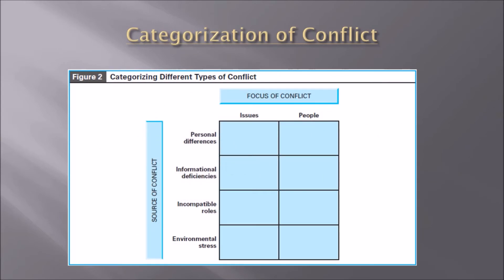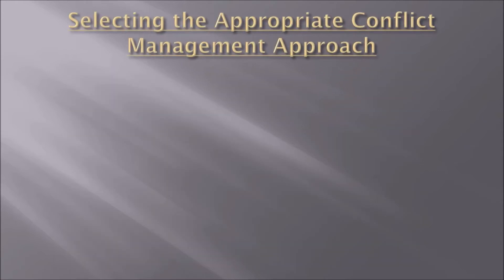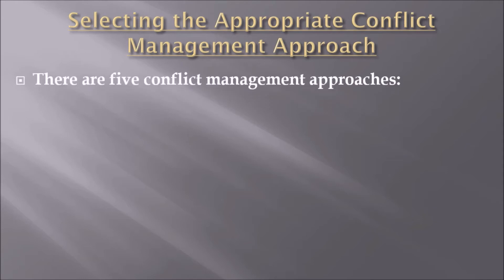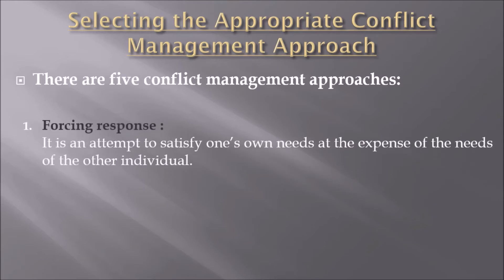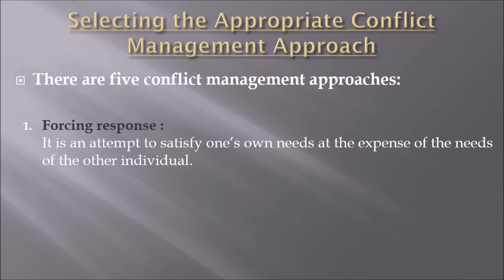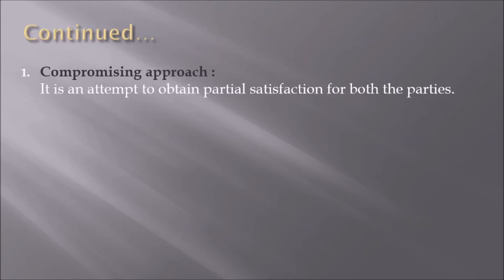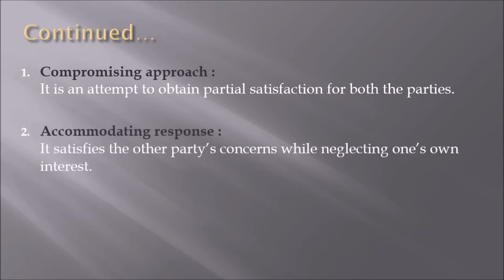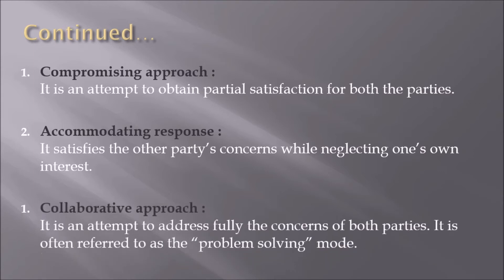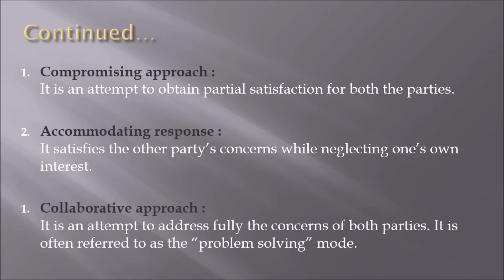Categorization of conflict — the figure explains the different types of conflict. Selecting the appropriate conflict management approach: there are five approaches. Forcing response: an attempt to satisfy one's own needs at the expense of the needs of the other individual. Avoiding approach: neglects the interests of both parties by sidestepping the conflict or postponing a solution. Compromising approach: an attempt to obtain partial satisfaction for both parties. Accommodating approach satisfies the other party's concerns while neglecting one's own interest.